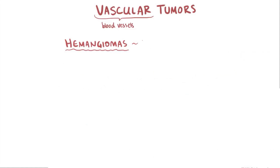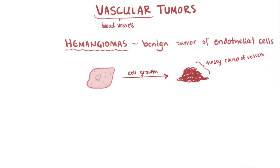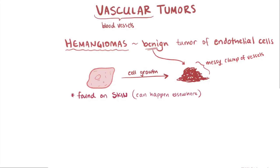Hemangiomas are the next type, and these are benign vascular tumors of the endothelial cells of the blood vessels. Too much endothelial cell growth typically leads to a messy clump of blood vessels all filled with blood, similar to a Kaposi sarcoma except these are benign. These tumors are usually found in the skin but can happen pretty much anywhere. They look like birthmarks and can be raised above the skin, rubbery, and range in color from dark purple to bright red.